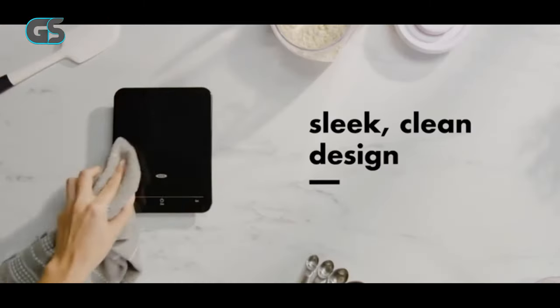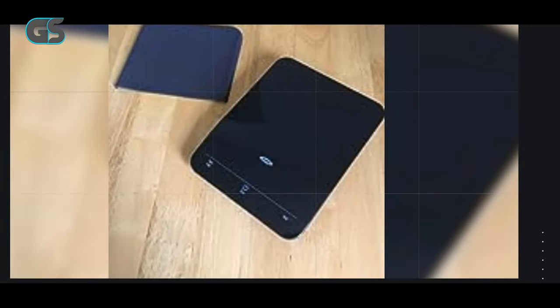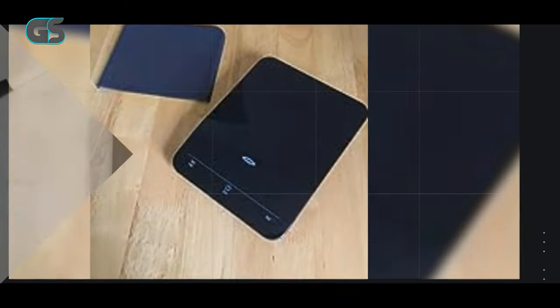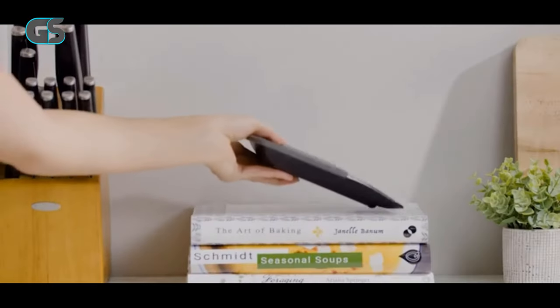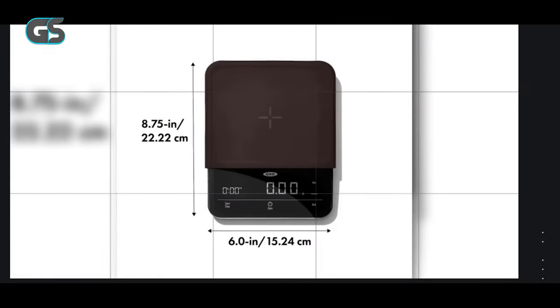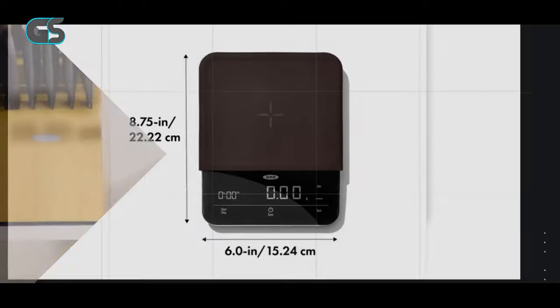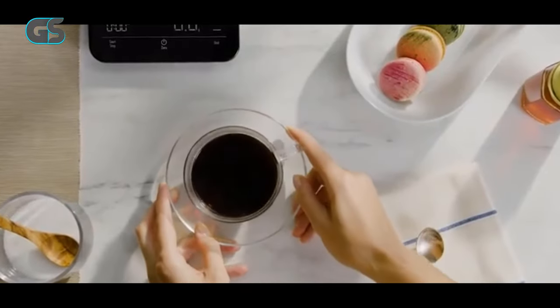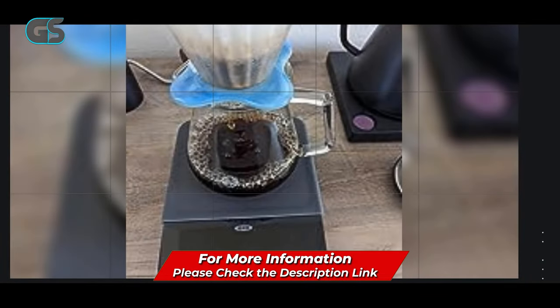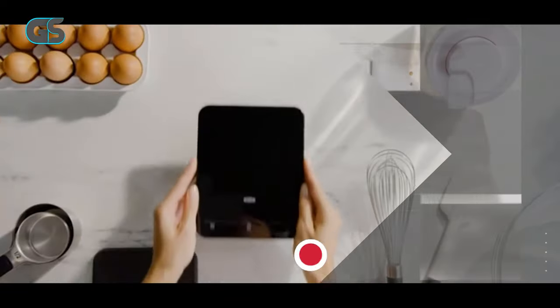In conclusion, the OXO Brew 6LB Precision Coffee Scale with Timer is a coffee lover's dream come true. Its accuracy, timer, and sleek design epitomize the essence of exceptional coffee brewing. This video provides a tantalizing glimpse into the capabilities of this scale, igniting a curiosity to elevate your coffee game. Whether you're a casual coffee drinker or a dedicated barista, this scale is a must-have tool that transforms your morning ritual into an artful, delightful experience.